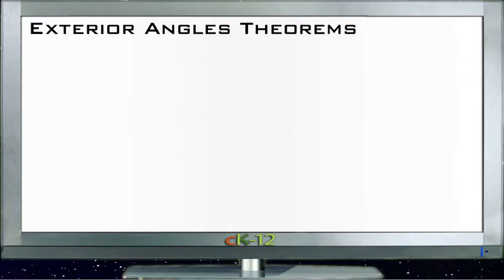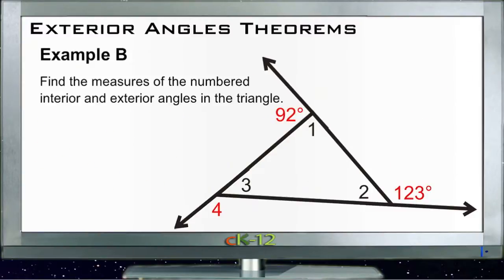All right, let's take a look at example B. Example B asks us to find the measures of the numbered interior and exterior angles in the triangle. So let's just kind of go in order by number here, starting with number one.